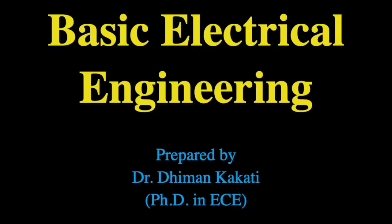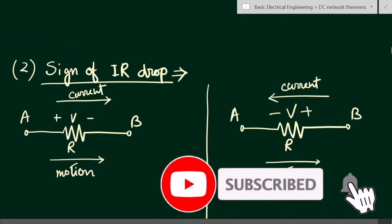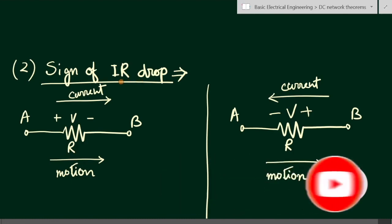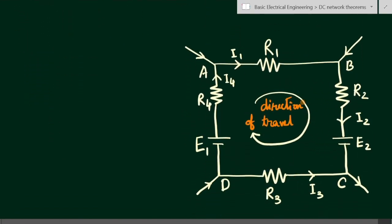Hello everyone, this is Dr. Dhiman. In this video we will learn about the determination of voltage sign. In the first part we will see the sign of the battery EMF, and in the second part we will see the sign of IR drop, that is the resistance voltage drop. Then we will consider a practical example from which we will find out the sign for the IR drop as well as the battery EMF.